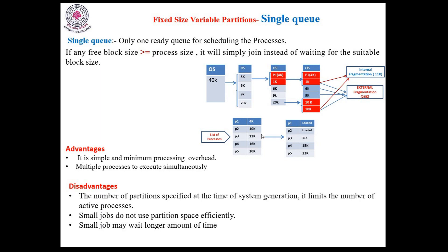For the next process P3, it cannot be loaded even though sufficient memory is available. The internal fragmentation is 1K plus 10K, and external fragmentation is 6K plus 9K. All together this is more than my P3 requirement, but this memory is not available in a contiguous manner. So P3 and even P5 cannot be loaded. These processes must wait a longer amount of time. These are the issues with the single queue.